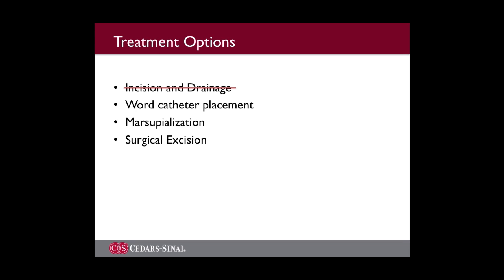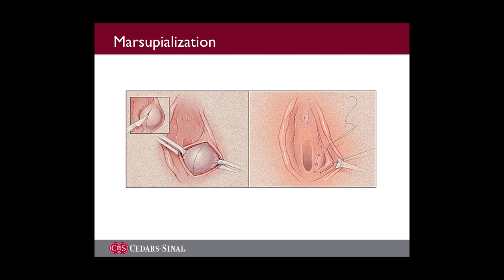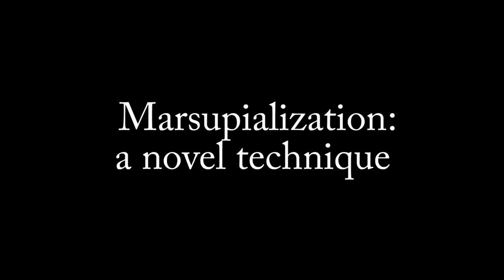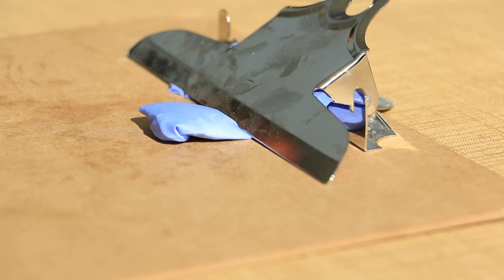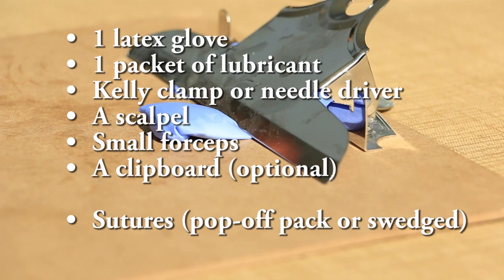Marsupialization is another option. Traditionally, this procedure has been described using incision and then individual interrupted sutures. However, today we will present a novel technique. Equipment for this portion of the procedure will be the same as for the previous, with the exception of also needing sutures, most easily found as a set of pop-offs, though two swedged-on suture packs can be used as well.